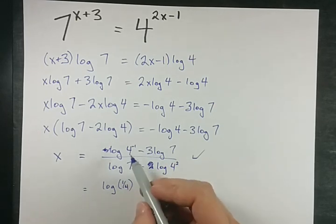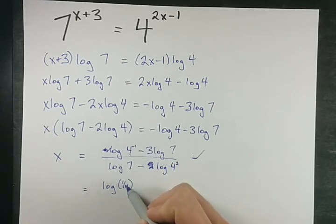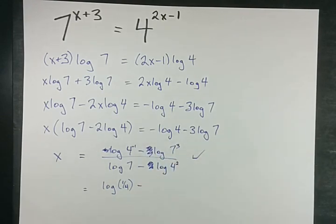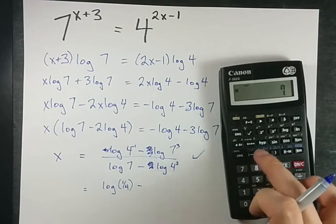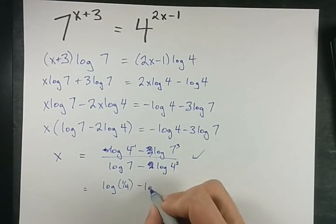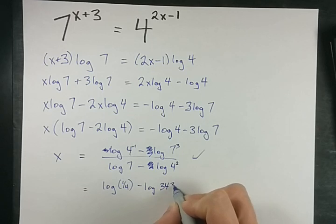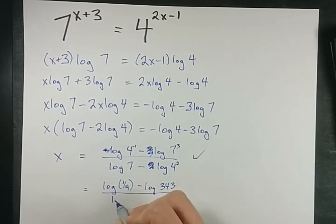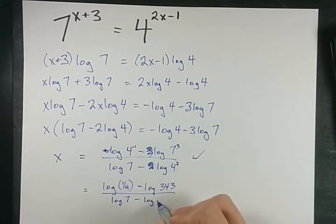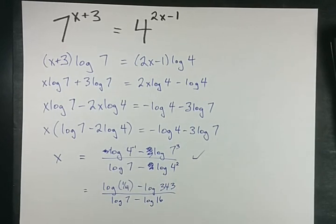I hope you remember what a negative exponent does. It flips the base. Oh, and I can take my 3 and put it up here. I don't even know what 7 cubed is. 7 to the power of 3 is 343. Pretty sweet.